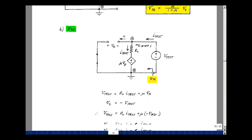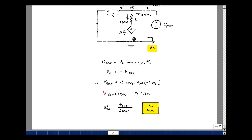That's minus V_test. And I'll bring this on the other side of the equation. So I have V_test plus mu V_test is equal to R_0 times I_test. So I'll bring the I_test over here and bring the 1 plus mu over here. So that's my Thevenin resistance. It's R_0 over 1 plus mu.